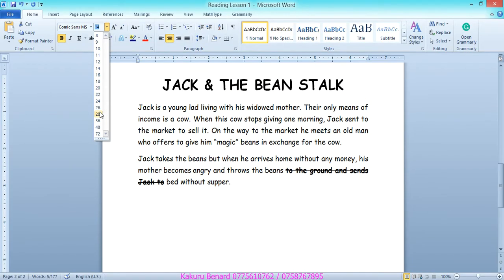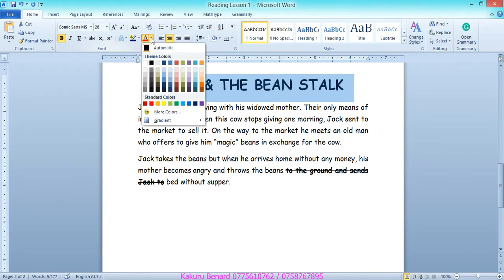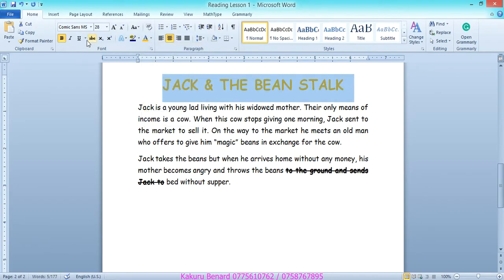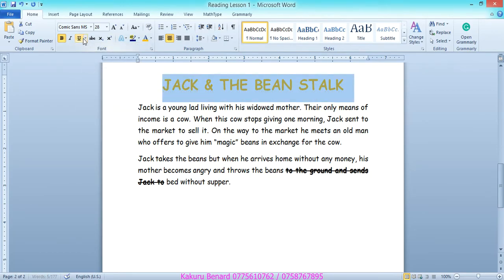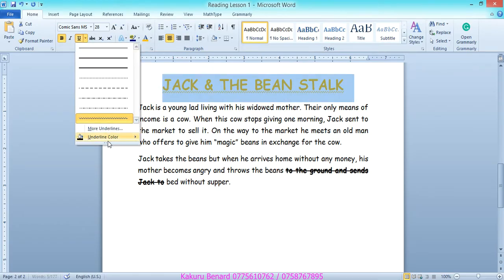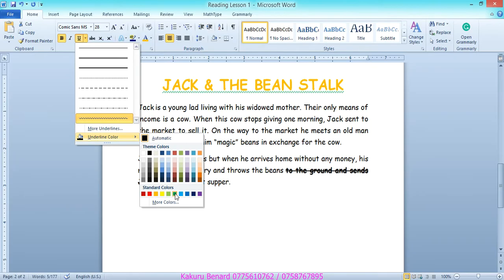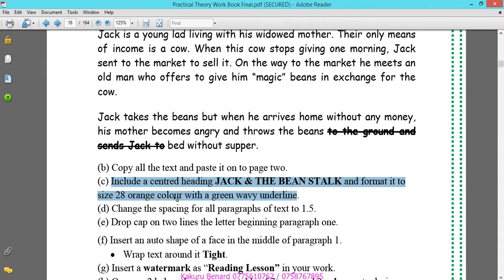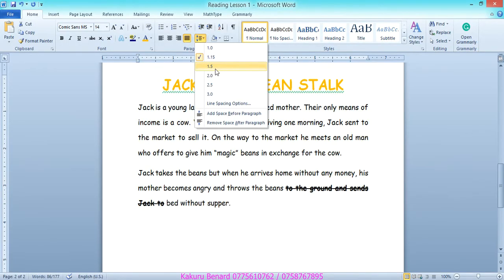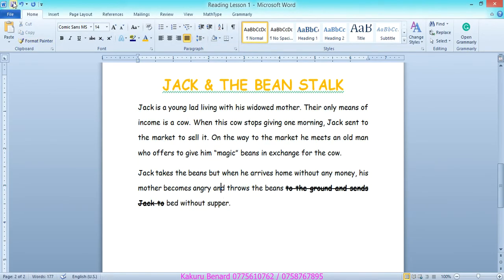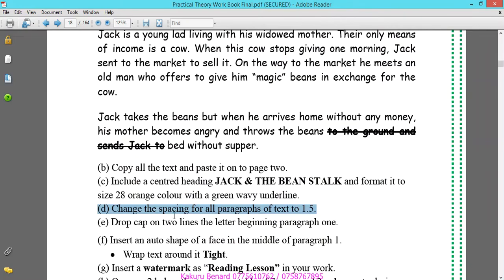Then underline with the wave. They said this wave should be in green color. Underline color, you say green. We are done with formatting the heading. Next is change the line spacing for all paragraphs of text to 1.5. We highlight our paragraphs, go under paragraph, then line spacing and choose 1.5. Save changes.